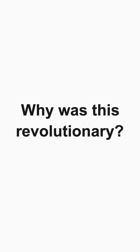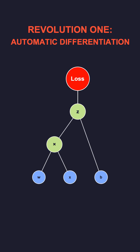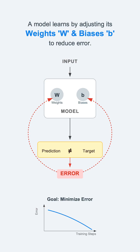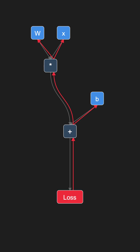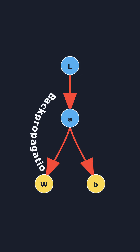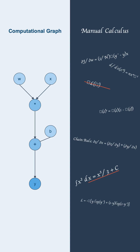So why was this revolutionary? First is automatic differentiation. To learn, a model needs to adjust its weights and biases to reduce error. The graph allows us to apply the chain rule backwards from the final error. This process is backpropagation, and it is done automatically. Before this, developers had to manually code these complex derivatives.